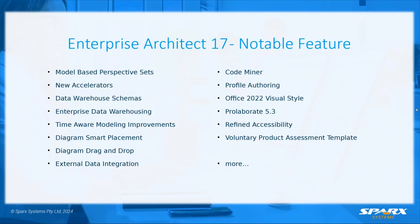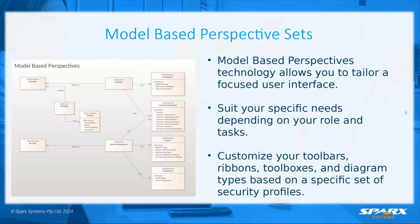Some of the notable features in Enterprise Architect 17 include model based perspective sets, new accelerators, data warehouse schemas, enterprise data warehousing, time aware modeling improvements including a brand new window, diagram smart placement and diagram drag and drop. There are also enhancements to external data integration especially around Office, Visual Studio and Eclipse, enhancements to the code miner, and a number of other features.